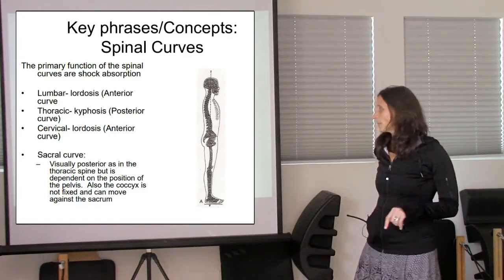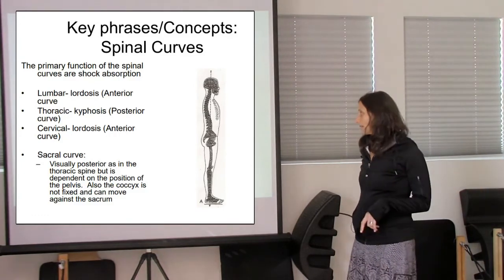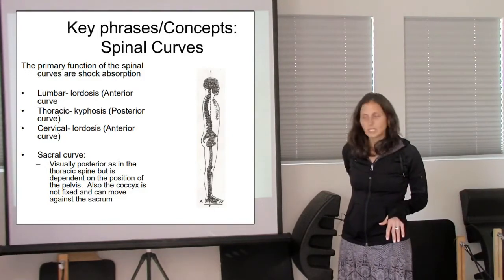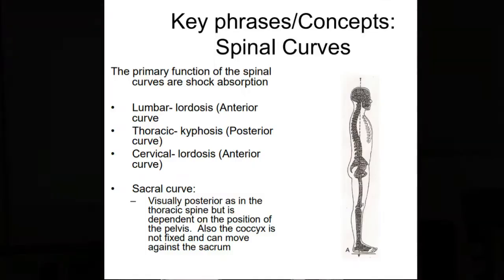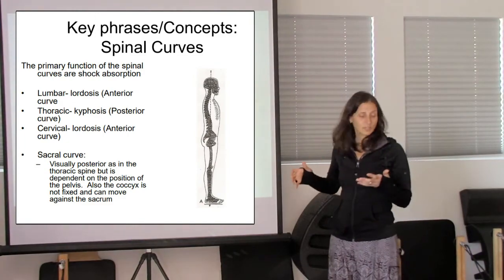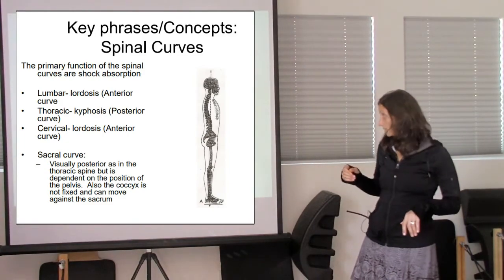The sacral curve is visually posterior as the thoracic spine, but it's dependent on the position of the pelvis. The coccyx is not fixed and can move against the sacrum as well. So the coccyx being just that very tip down there, the sacrum is going to be here, the coccyx is just the very little bit. While it's fused, it does sometimes move a little bit, and with some people more than others.